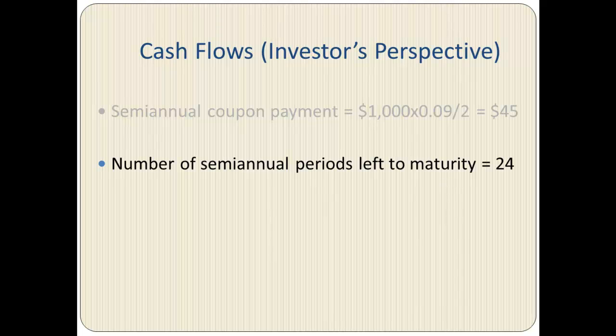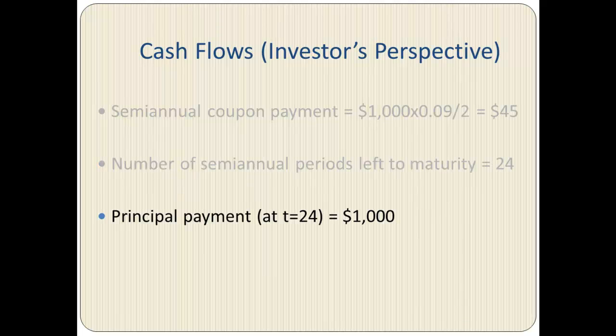There are 12 years left to maturity or 24 semi-annual periods left to maturity. The principal payment at maturity is $1,000. This is the par value.